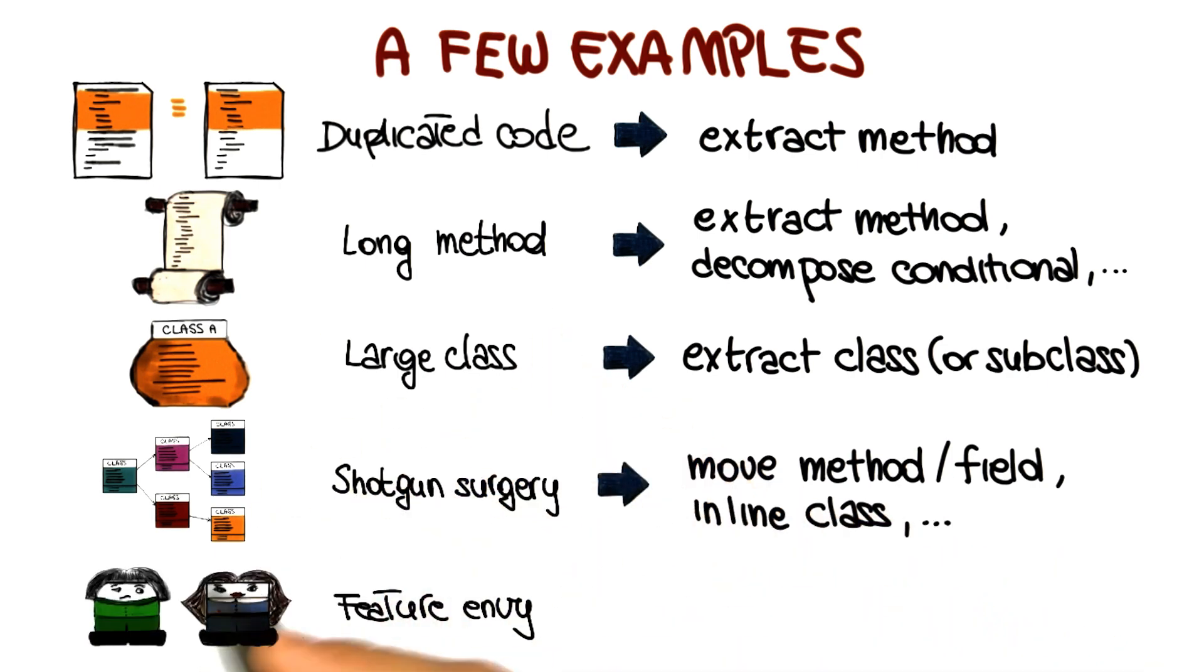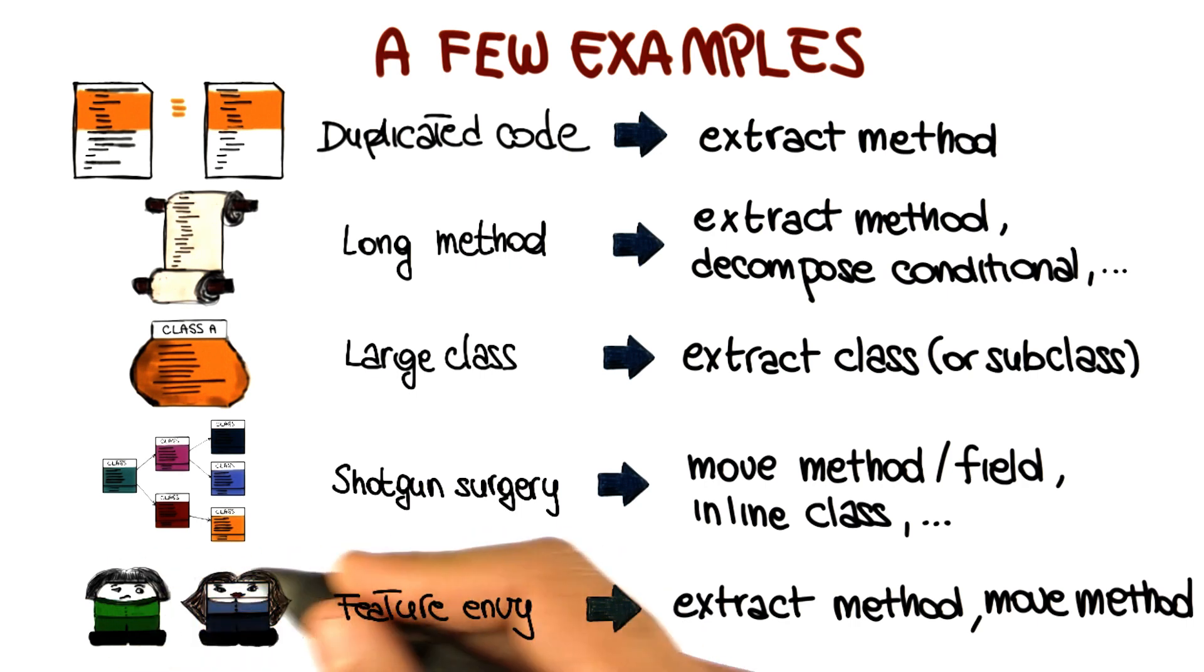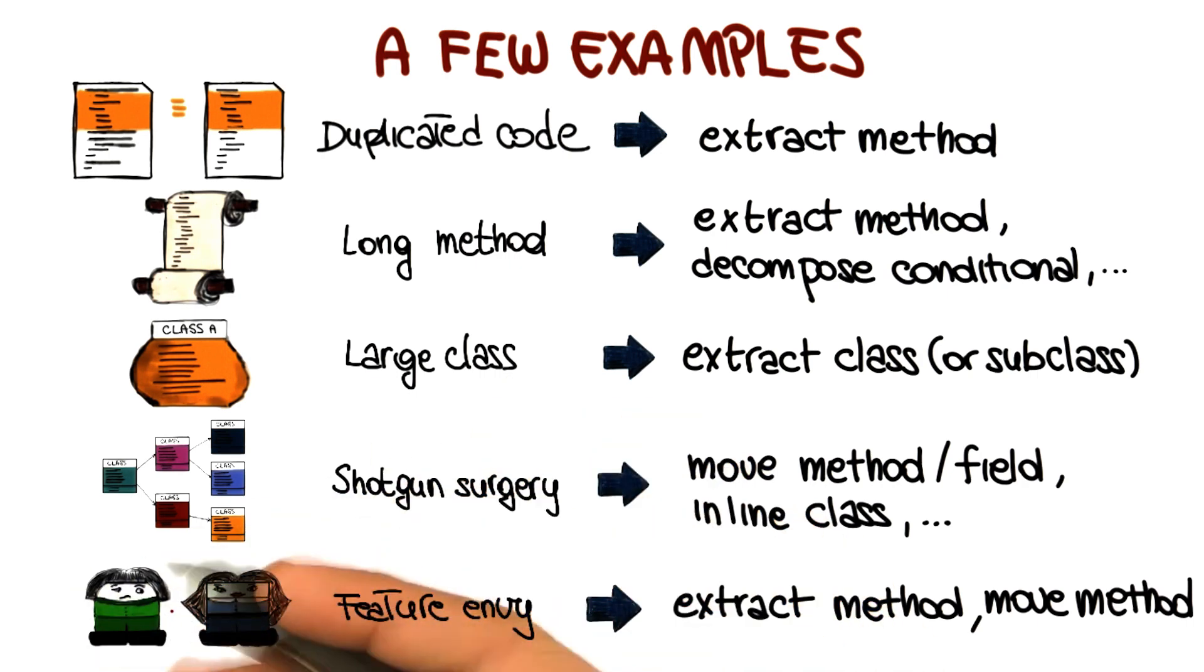The last smell I want to mention is one I really like. It's the feature envy, and it refers to a method that seems more interested in a class other than the one it belongs to. So for example, this method is using a lot of public fields of another class, is calling a lot of methods of the other class. And so in this case, the solution is really clear. What you want to do is to perform the extract method refactoring, and then the move method refactoring, so as to take the jealous method out of the class where it doesn't belong, and get it home to the class where it really belongs. And once more, the effect of this is that you decrease the coupling between the two classes, and therefore you have a better system, and also you eliminate the envy, which is always a good thing.